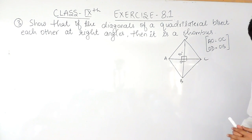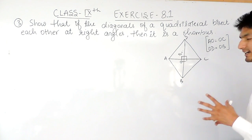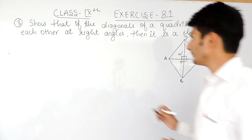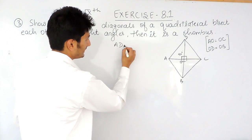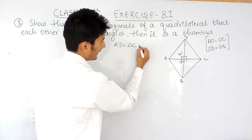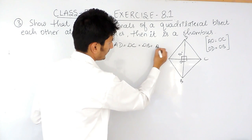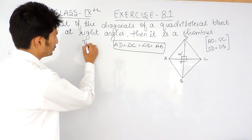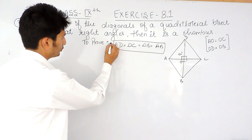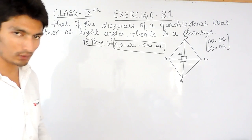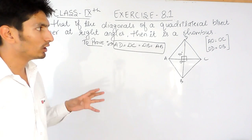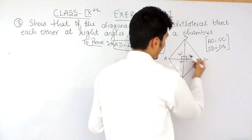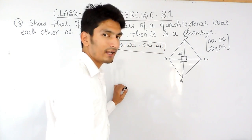We have to prove that this quadrilateral is a rhombus. A rhombus is a four-sided closed figure where all four sides are equal. So if I am able to prove that AD equals DC, and DB equals AB — that is, all sides are equal — then this quadrilateral will be known as a rhombus.